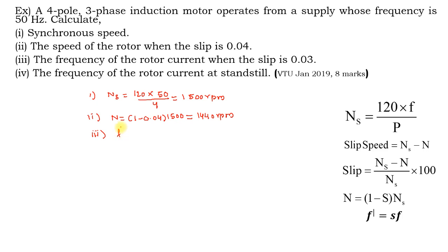The third one: find out the rotor frequency. The formula is f' = s × f. The slip is given as 0.03 and the supply frequency is 50 Hz, so the rotor frequency is 1.5 Hz.